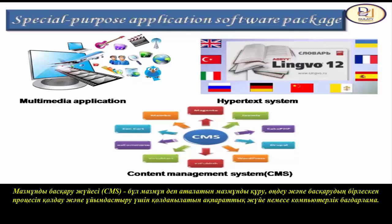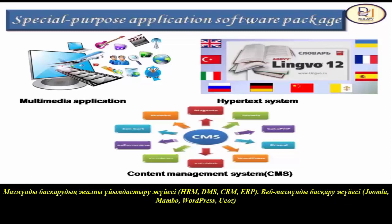A Content Management System (CMS) is an information system or computer program used to support and organize the collaborative process of creating, editing, and managing content. Enterprise-wide content management systems include: HRM, DMS, CRM, and ERP.